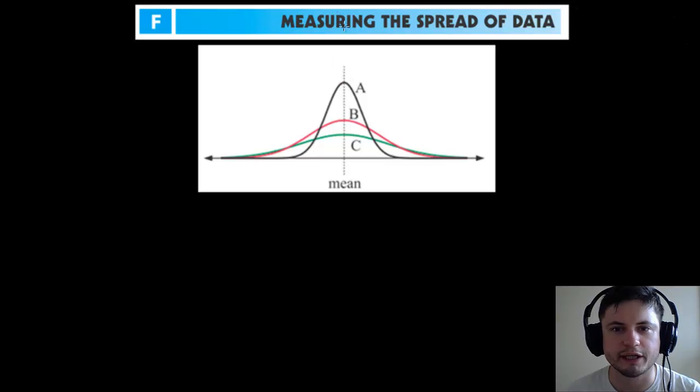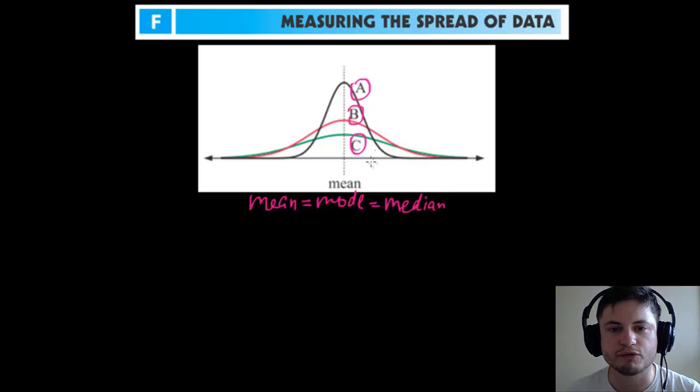sets of statistical data. This one here is A, this one here is B, this one here is C. If you look really closely and try to calculate their mean, mode, and median, their mean, mode, and median are all equal. That means that even though these are three different sets, they will give you